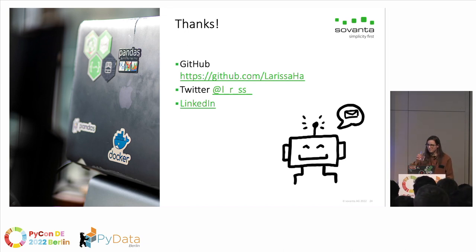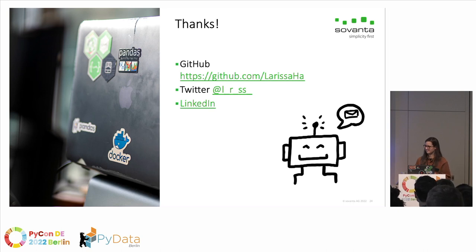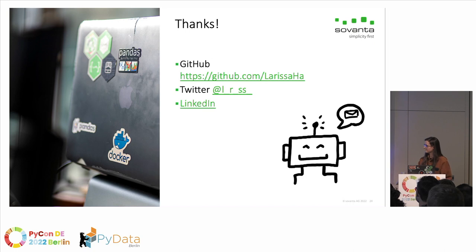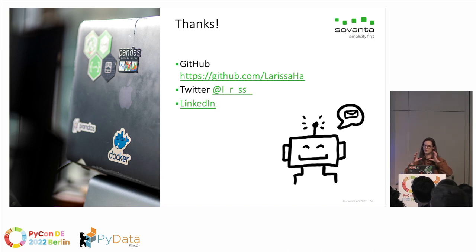Thank you for an amazing talk — very interesting. We have a lot of questions, so let's try to address some of the top-voted ones. Alina asks: the examples shown are all document classification problems. Have you explored these approaches for other NLP tasks like translation or named entity recognition? For translation, I unfortunately have no experience. For NER, I think you can use the model-agnostic approaches — you just take the model as a black box and wrap the explainer around it, so it doesn't really matter what's inside.